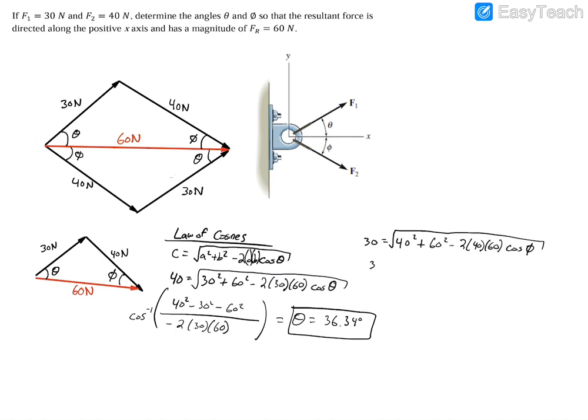And once again, solve for that angle. So we'll have 30 squared to remove that square root, minus 40 squared minus 60 squared, divide all of that by negative 2 times 40 times 60. And now we're going to have all this equal to cosine phi. So to make it equal to just phi, we want to take the inverse cosine. So we'll have cosine minus 1 of all of that equals phi. Make sure your calculator is in degrees, by the way. And if you plug this into your calculator, you'll have that phi equals 26.38 degrees.